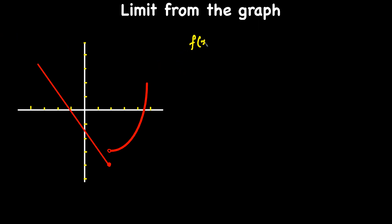So we have a function f of x and we want the limit as x approaches 2 from the left-hand side. Looking at this graph, as x is approaching 2 from the left — going along the direction 1, 2 — we reach a value of the function of negative 4.